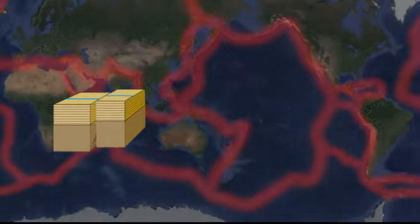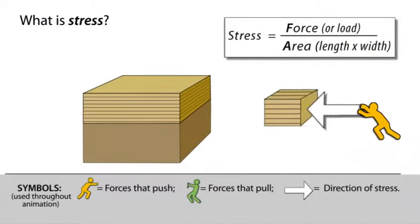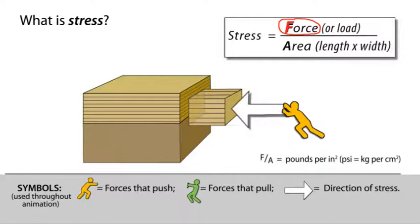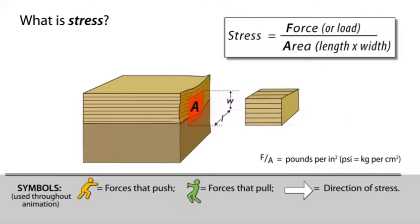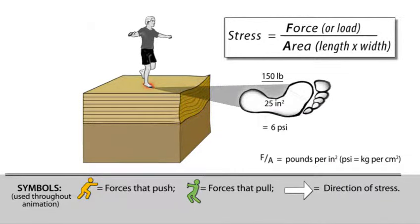What is stress? Stress is a force that can act on an object, such as a rock, to change its shape or volume. Stress is equal to the amount of force — in this case compressional or squeezing force — acting on the contact between two blocks. The amount of stress is described as a force per unit area. For example, a 150-pound person standing on the ground exerts about 6 pounds per square inch on the sole of their foot.